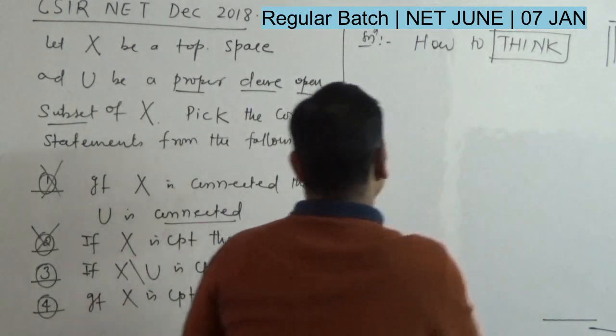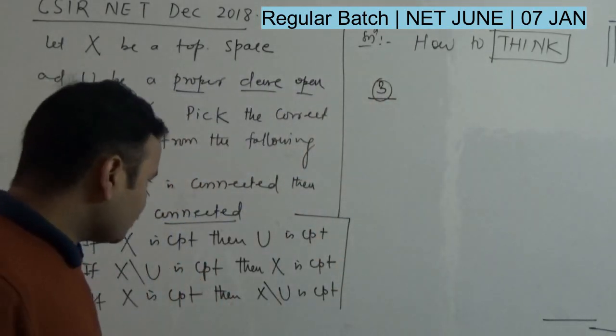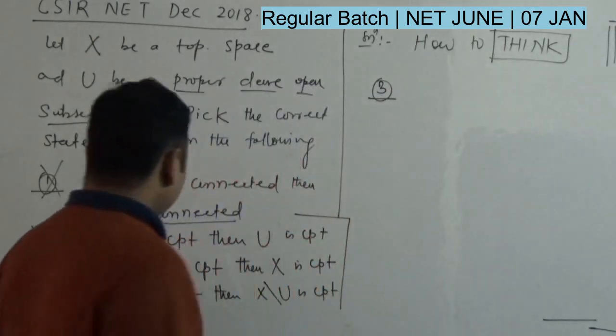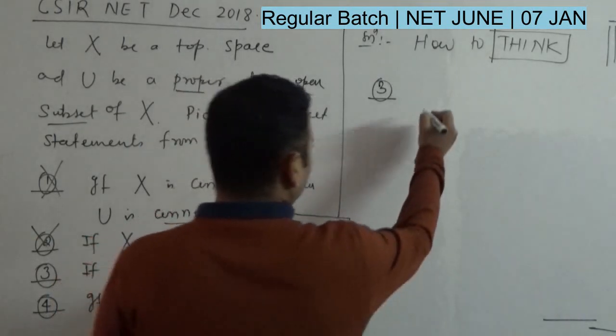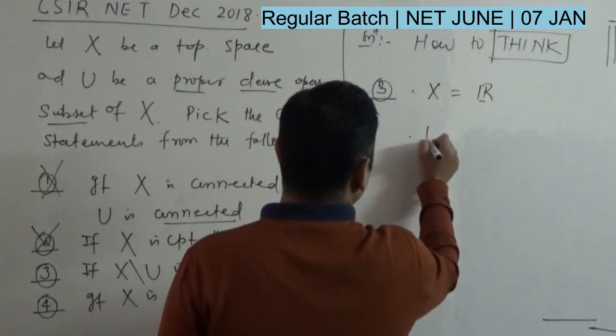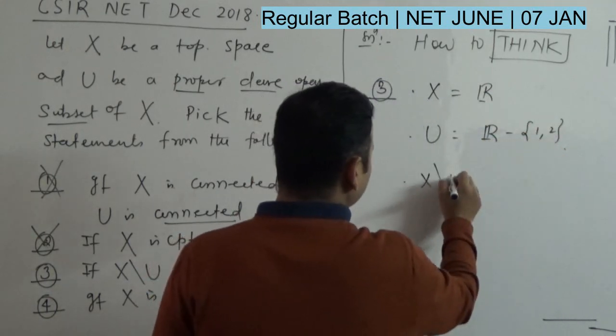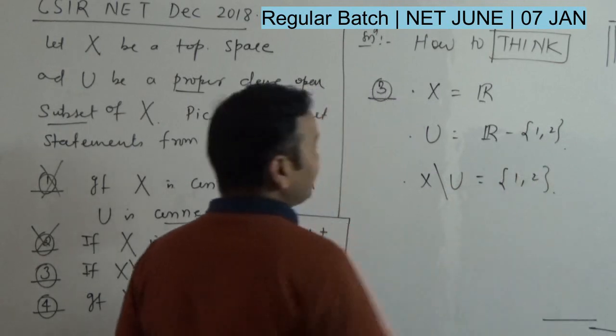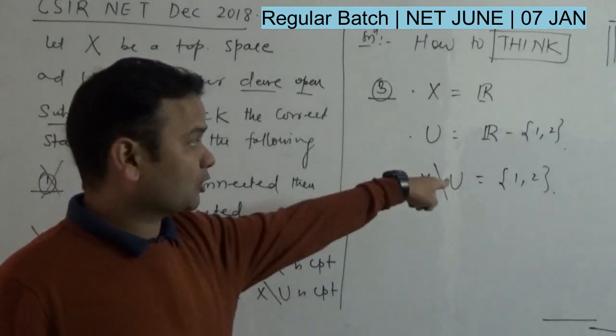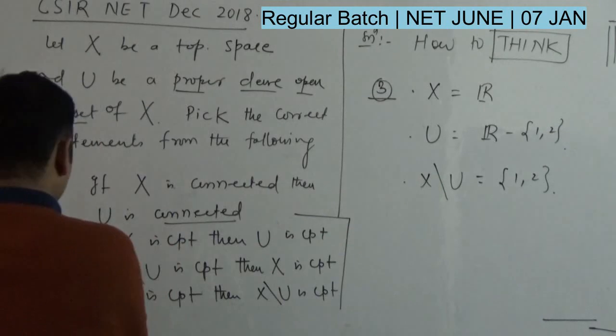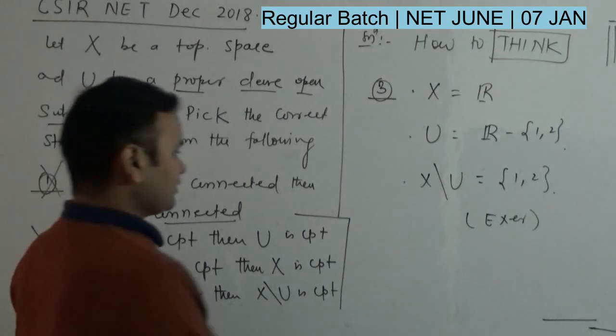Now let's come to the third option. The third option exactly says: if X\U is compact then X is compact. Take X equal to R and U equal to R minus {1,2}. What is X\U? It is nothing but a finite set, and a finite set is always compact. But X fails to be compact. So again, the third option is wrong.